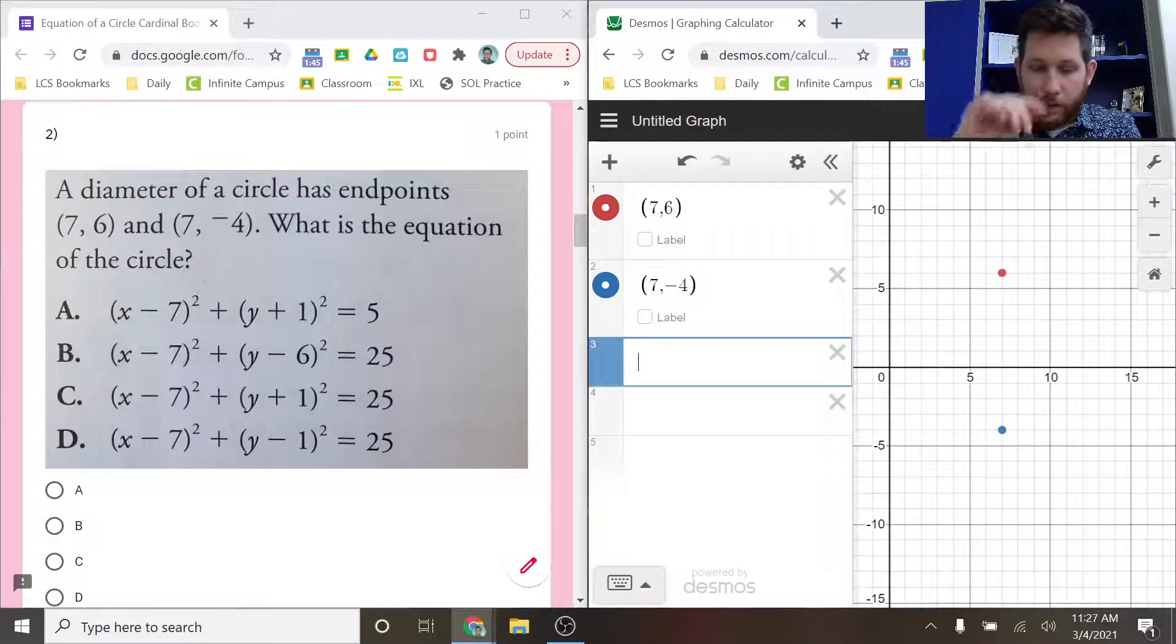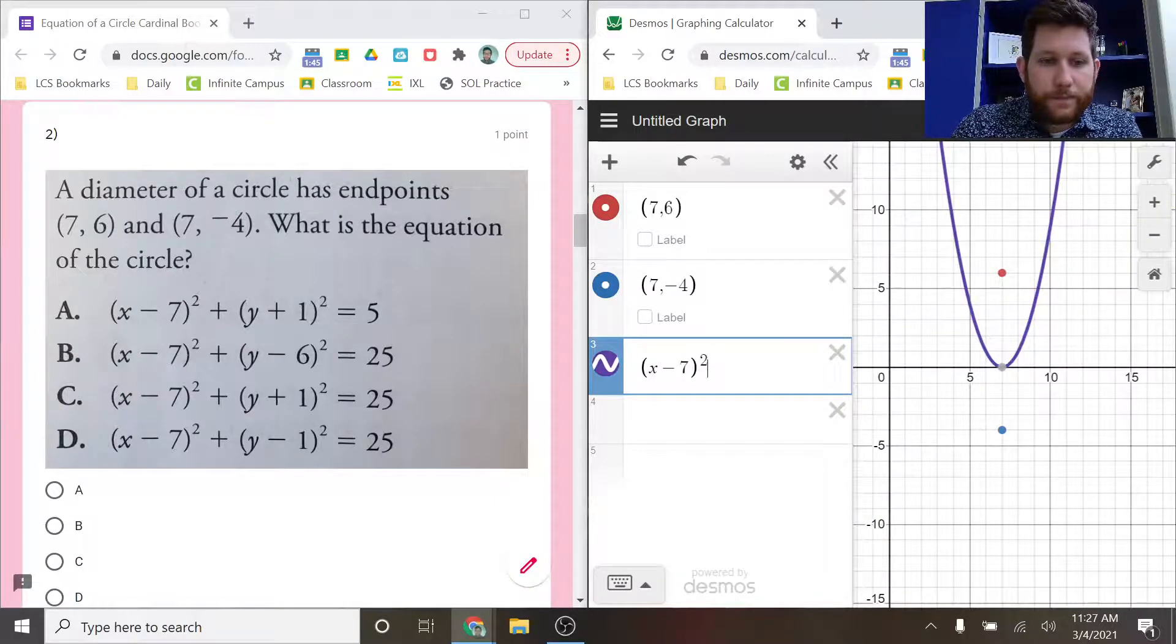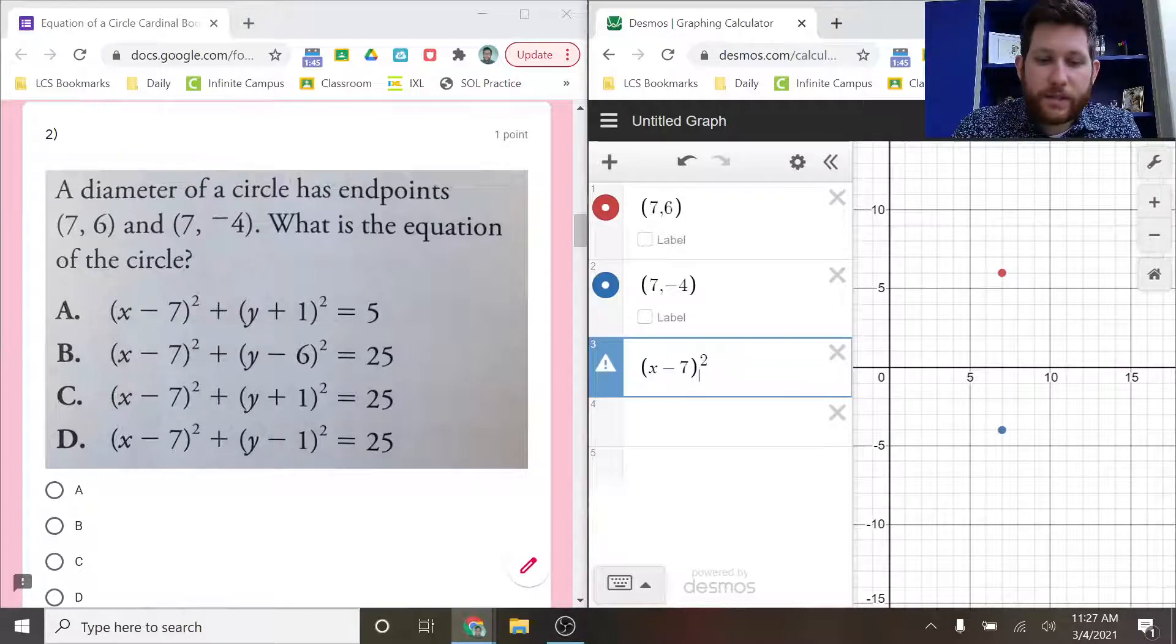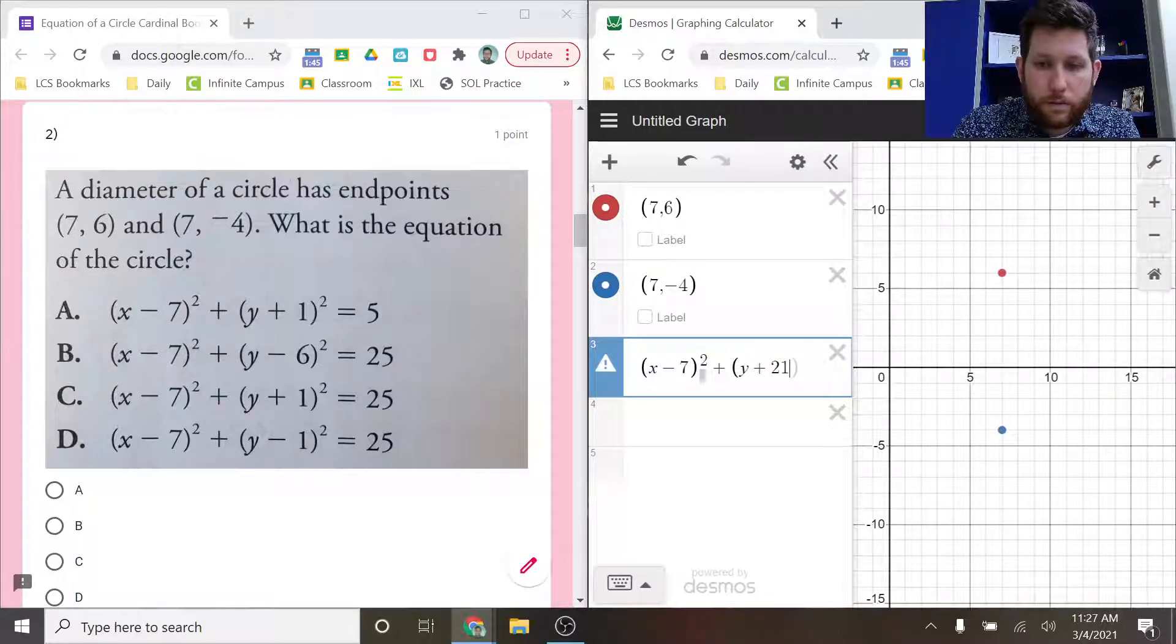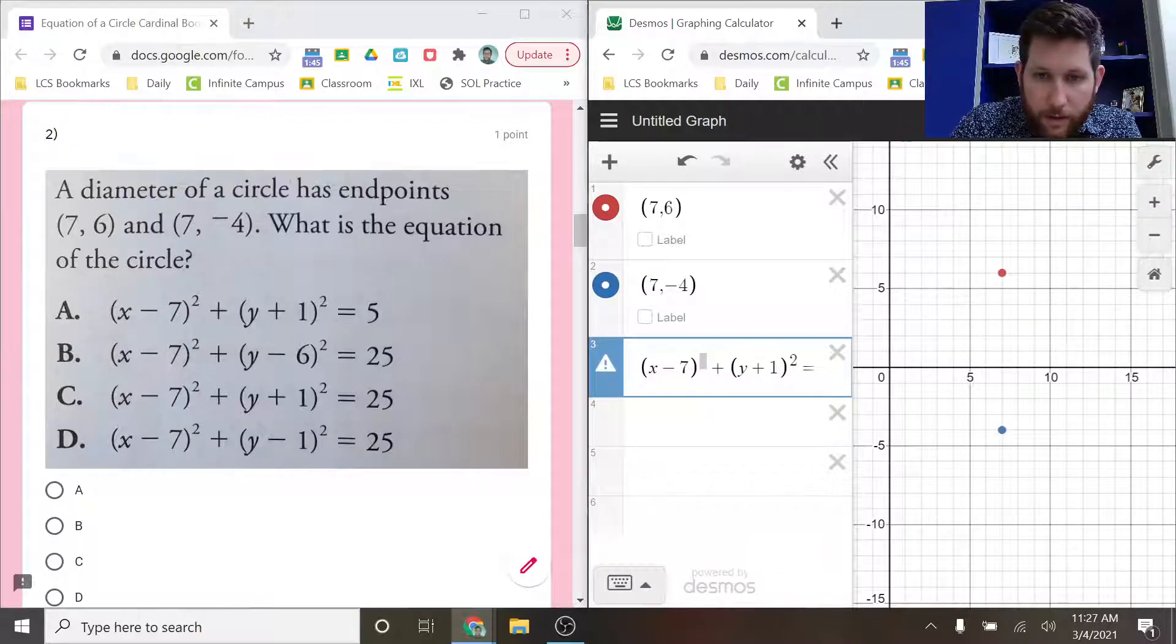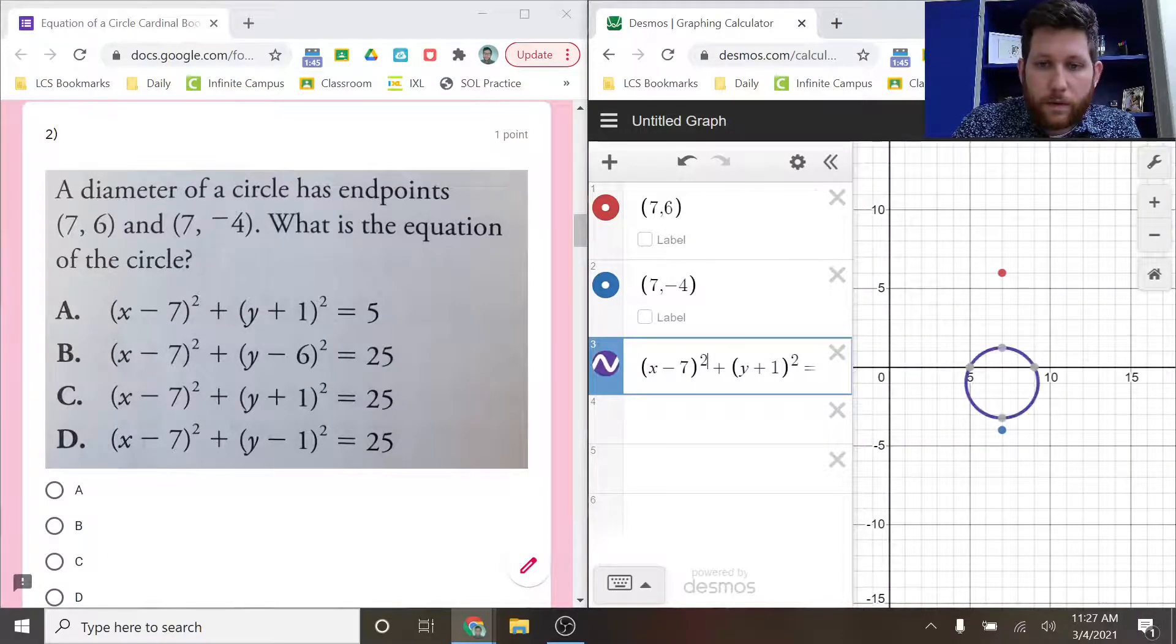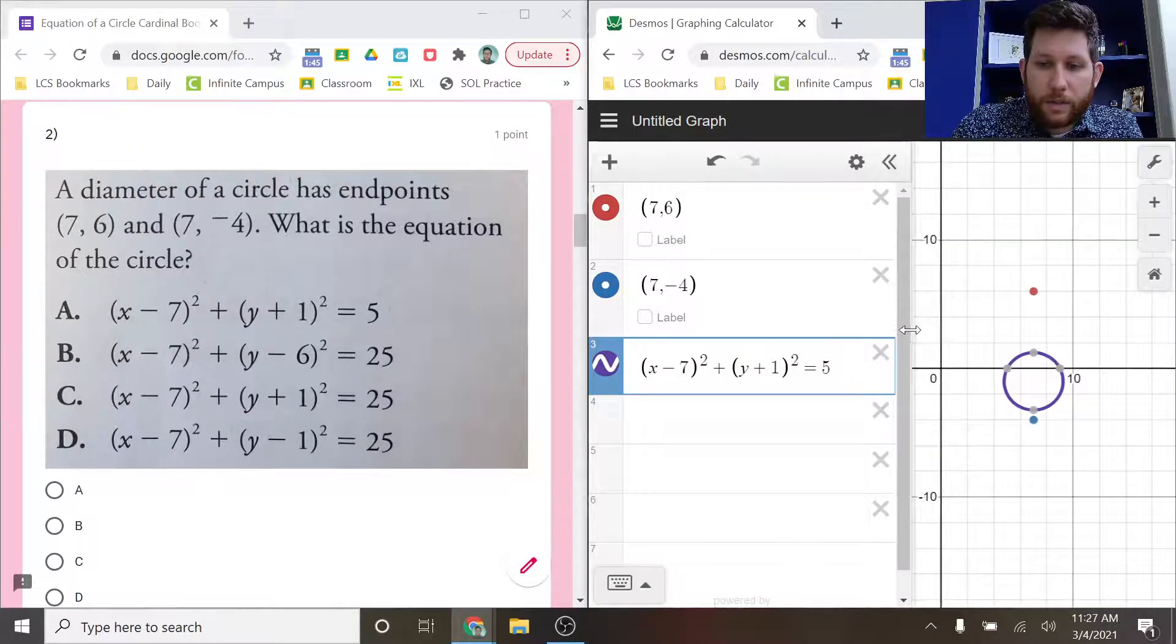Now at this point, what you can actually do on Desmos is you can actually just go ahead and type in the equation just like you see it. So, (x - 7)² plus, sorry, hang on, plus (y - 1)² equals 5. Actually, that thing right there is giving me some issues. Hang on, let me... there we go. Notice all I did was I took this, and let me kind of expand this out a little bit so we can see. I just took it and I typed in the equation, and it graphed the circle for me.